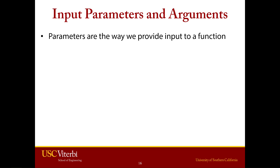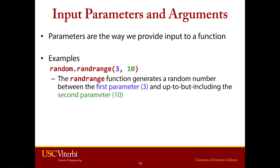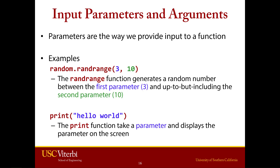Some examples we've seen so far: we've used randrange, like randrange(3, 10). That's two different parameters — the 3 and the 10. Given those two arguments into the function, what we get is a number from 3 up to but not including 10. Another example is the print function. We use print all the time, and we see that it takes an argument or parameter and prints that to the screen.